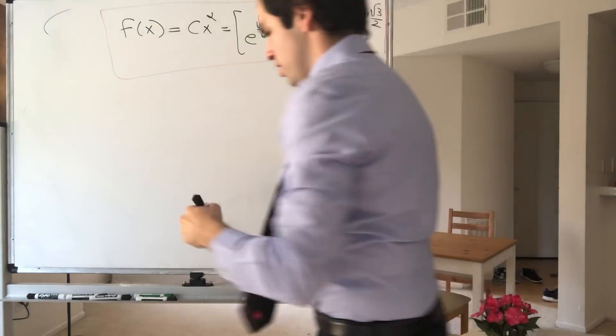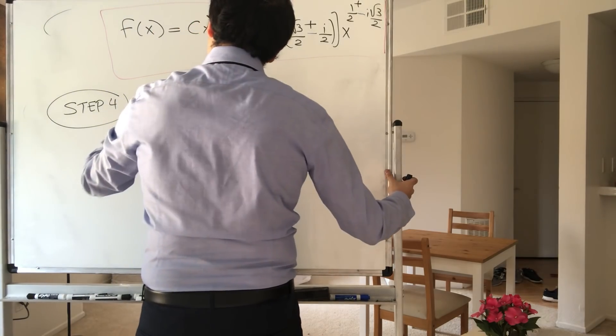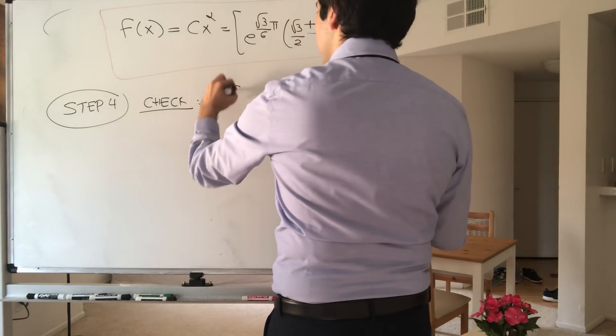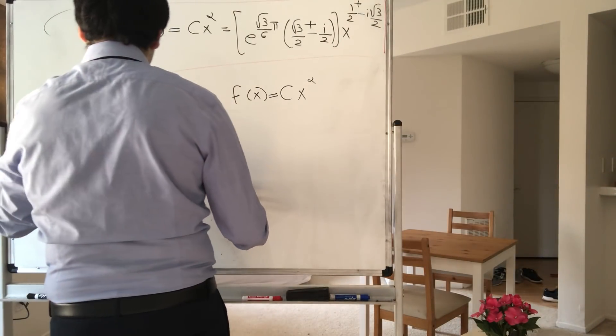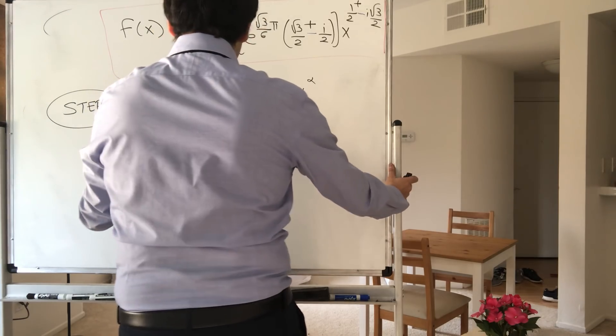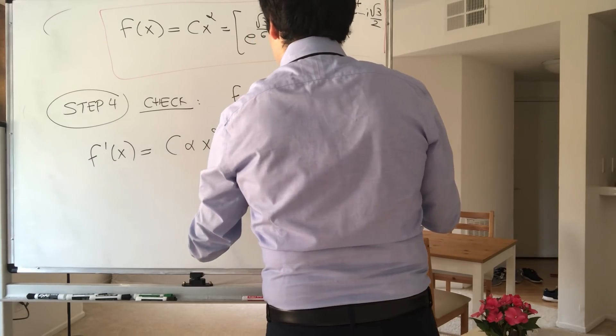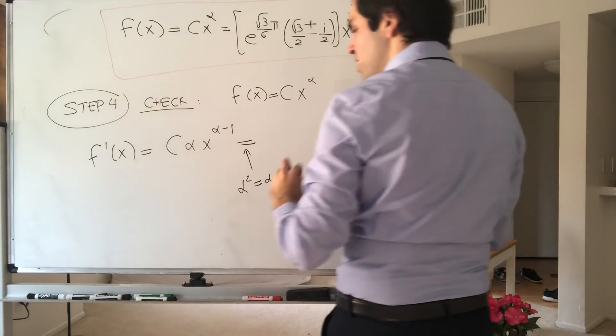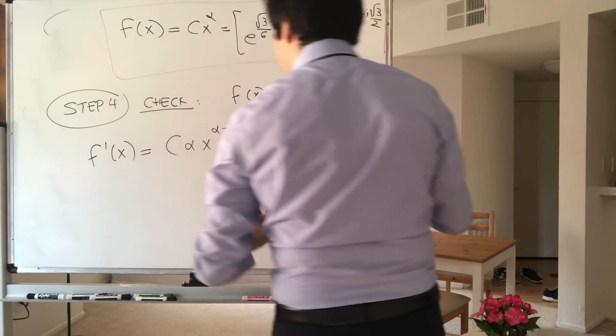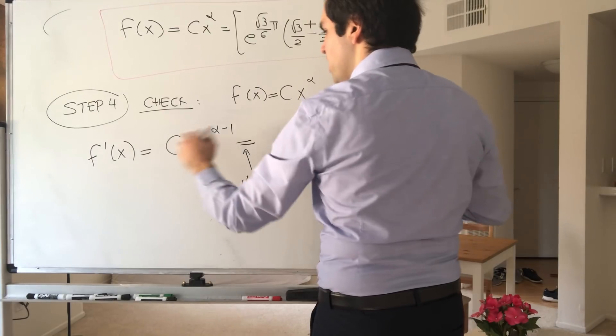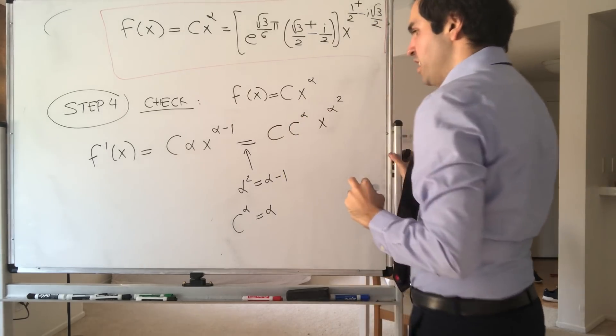And if you want, check that this works. So I think step 4, we'll check it, but it's not very hard to check, because you see, if f of x equals cx to the alpha, then f prime of x, it's c alpha times x to the alpha minus 1. But remember, we assumed that alpha squared was alpha minus 1. And also, we assumed that, what was it, c to the alpha equals alpha.